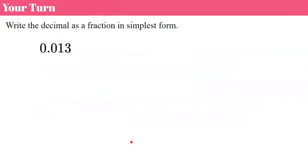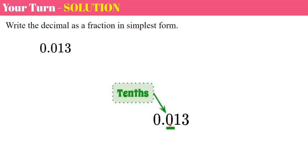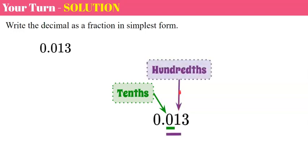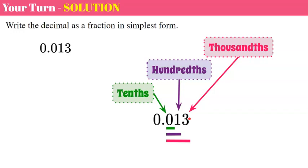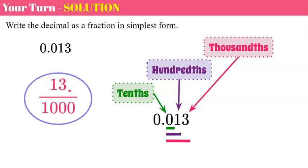Now it's your turn. Pause the video and write the decimal as a fraction in simplest form. Welcome back. So this is read mathematically as thirteen thousandths — we have three decimal places. The first digit is our tenths, the second digit is our hundredths, and the third digit is our thousandths. So if I have three digits, I place it over a thousand — a zero for each digit. This is going to be written as a fraction as thirteen one-thousandths, and that is in simplest form because thirteen is prime.